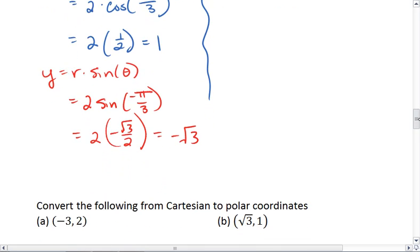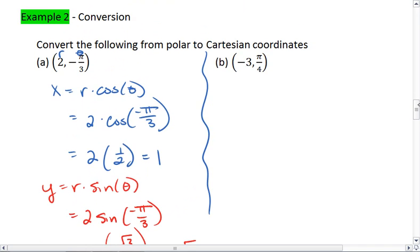Or, I'm sorry, our y value. So this ordered pair here in polar is the same as 1 negative root 3 in Cartesian coordinates.